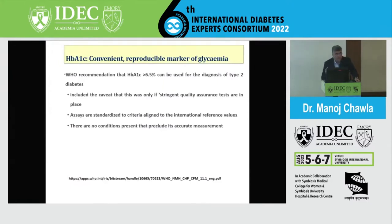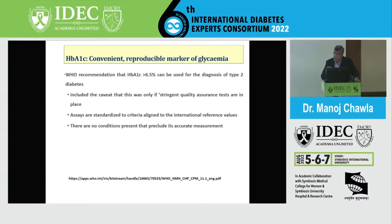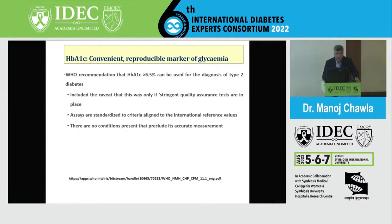HbA1C is considered a convenient and reproducible marker of glycemia. The WHO recommended that an A1C greater than 6.5% can be used for the diagnosis of type 2 diabetes, with the caveat that stringent quality assurance tests must be in place. Assays must be standardized to criteria aligned with international reference values, and no conditions should be present that preclude accurate measurement.